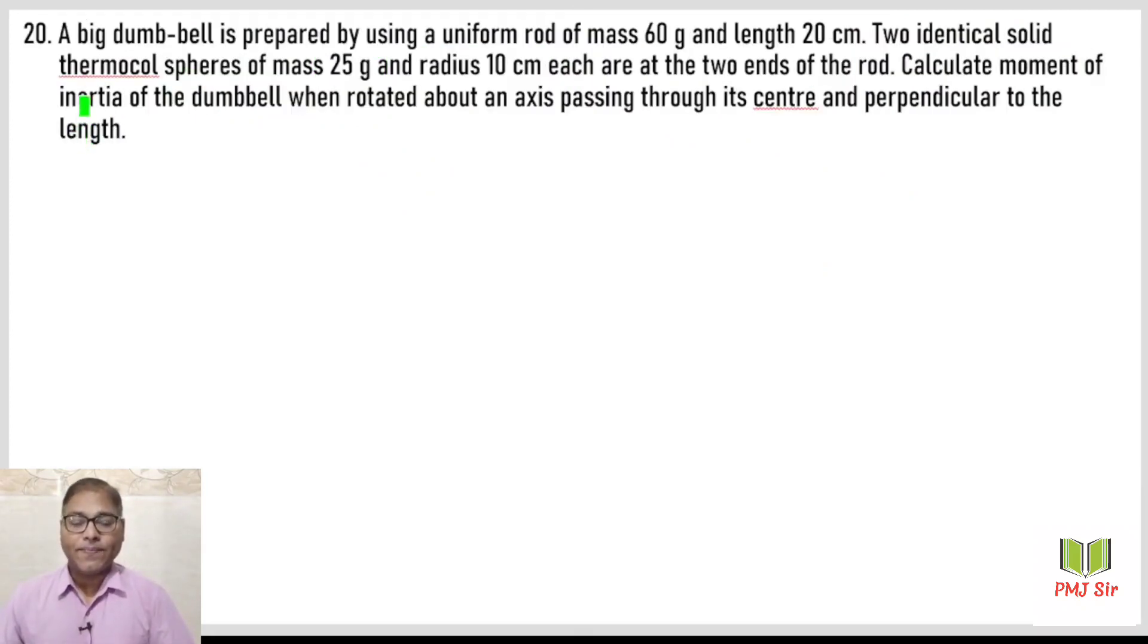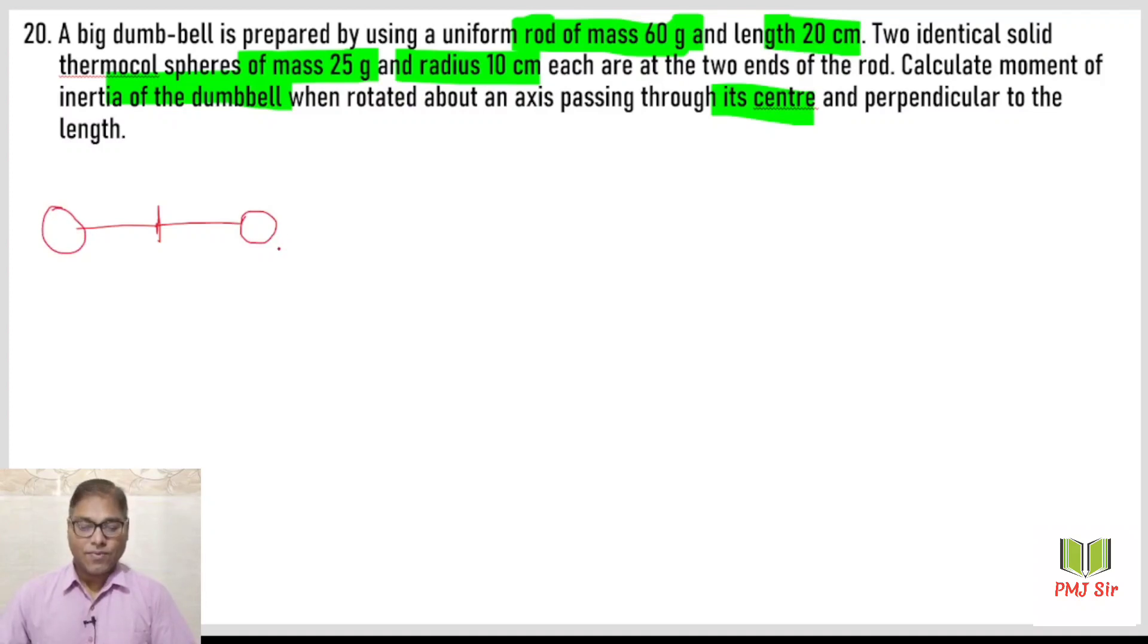Let us see question number 20. A big dumbbell is prepared by using a uniform rod of mass 60 grams and length 20 centimeter. Two identical solid spheres of mass 25 grams and radius 10 centimeter each are at the two ends of the rod. Calculate the moment of inertia of the dumbbell when rotated about an axis passing through the center and perpendicular to the length.